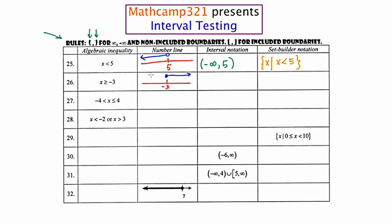There's no blue until the blue starts at negative 3. It's an included boundary, so I'm going to use a bracket. And then it keeps going forever to the right, which is known as infinity. Infinities always use parentheses. Using set builder notation, like the back of our book, this would be: a brace, x such that x is greater than or equal to negative 3.